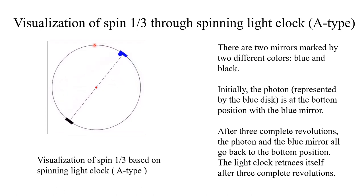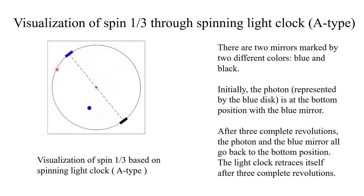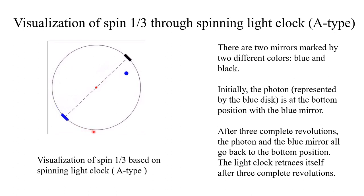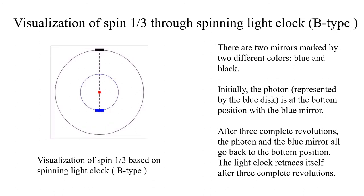After two and a half revolutions, we proceed to three complete revolutions. After three complete revolutions, the photon and the blue mirror all go back to the bottom position. The light clock retraces itself after three complete revolutions. This is spin 1 over 3.